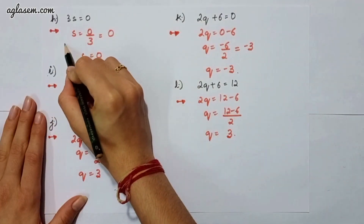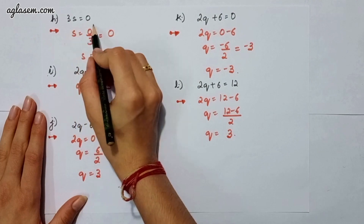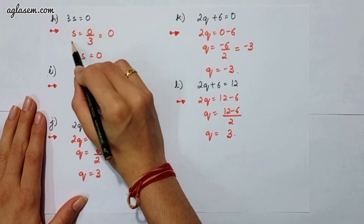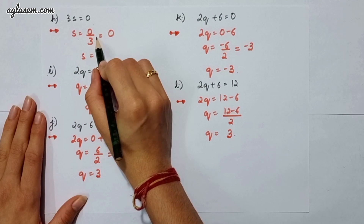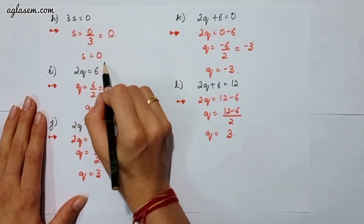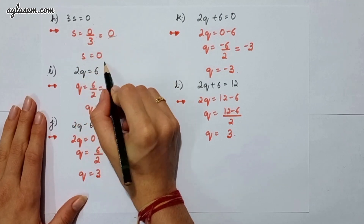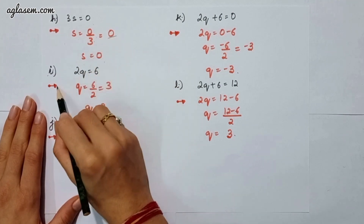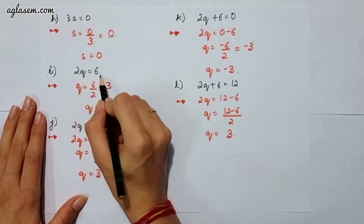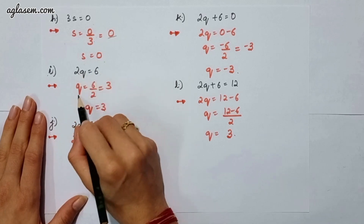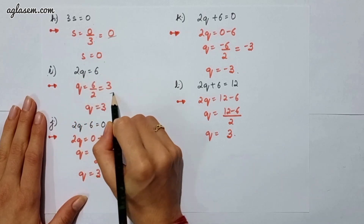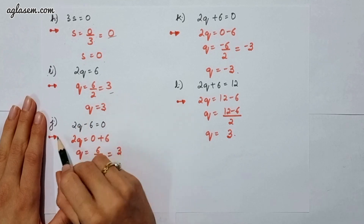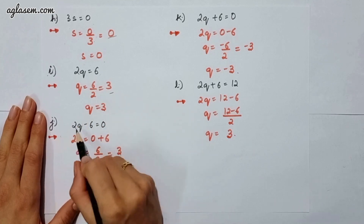The h part says 3s is equal to 0. So s is equal to 0 upon 3, and 0 divided by 3 is 0, therefore s is 0. The i part says 2q minus 6, so q is equal to 6 upon 2, which gives 3.